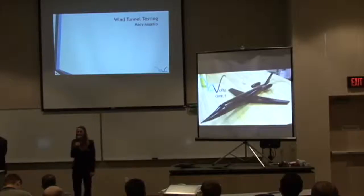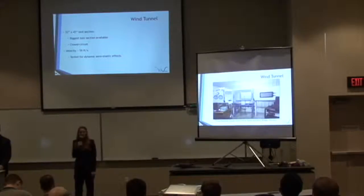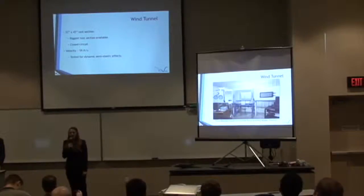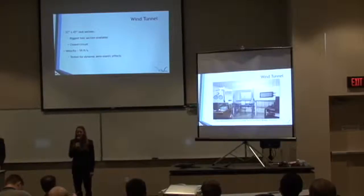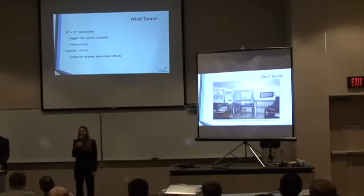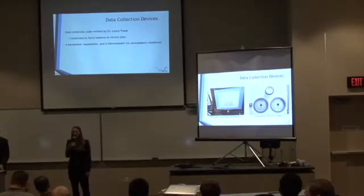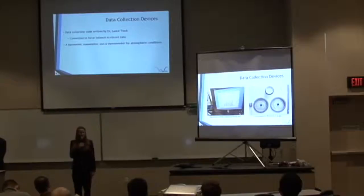Thank you, Kelsey. I'm Macy and I'll now go over the wind tunnel testing. We used a closed-circuit wind tunnel located in the Tracy Doryland Wind Tunnel Facility here on campus, shown on the secondary screen. This wind tunnel has a 32-inch by 45-inch test section, the largest test section we had available. The velocity we tested at was 59 feet per second — different from the 160 feet per second Kelsey mentioned. We found this velocity by putting our model at maximum angle of attack of 20 degrees and increasing velocity until dynamic or elastic effects were seen. For data collection, we used a data collection code from Dr. Lenz Traub, connected to a computer, plus a barometer, manometer, and thermometer for atmospheric conditions.